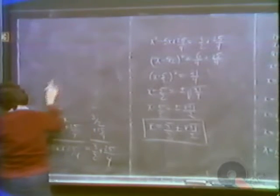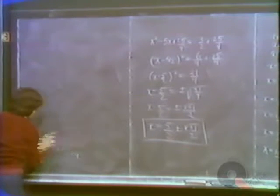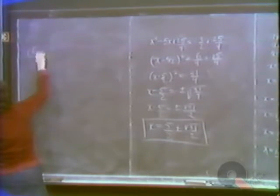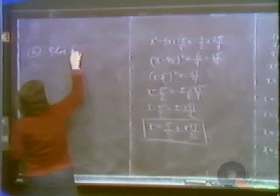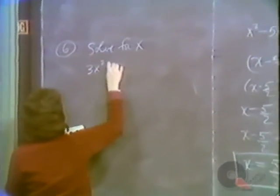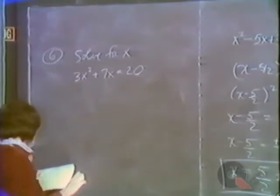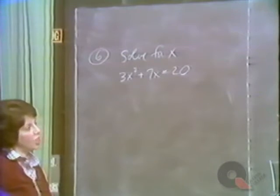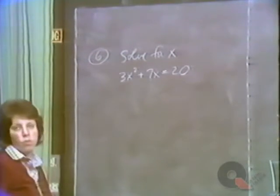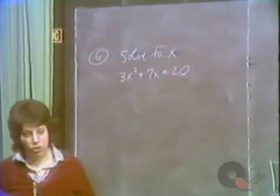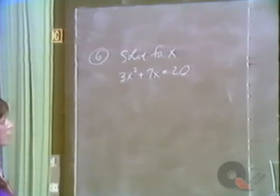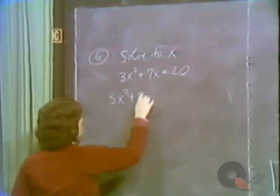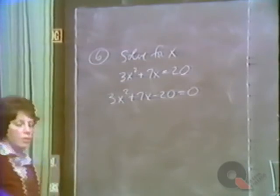In the next example — Example 6 — you choose your own method to solve it, as problems will generally be presented. Solve for x: 3x squared plus 7x equals 20. Since completing the square with fractions is messy, most people go with factoring or the quadratic formula. Let's try factoring: rewrite as 3x squared plus 7x minus 20 equals zero.